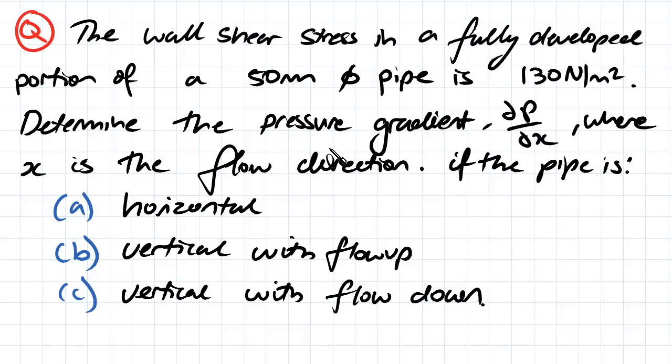Determine the pressure gradient, the partial derivative of pressure with respect to x, where x is the flow direction, if the pipe is: (a) horizontal, (b) vertical with flow up, or (c) vertical with flow down.